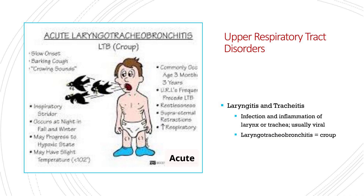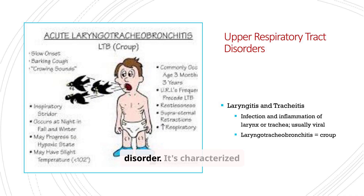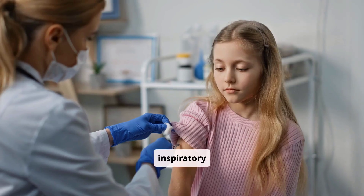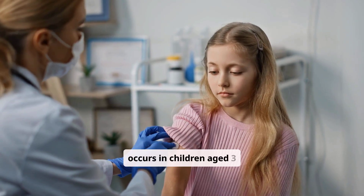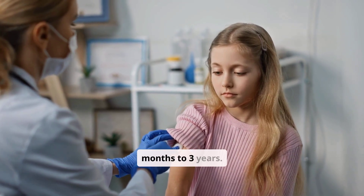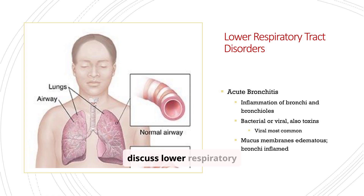Acute laryngotracheal bronchitis, or croup, is another upper respiratory tract disorder. It's characterized by a barking cough and inspiratory stridor, and commonly occurs in children aged 3 months to 3 years.